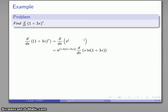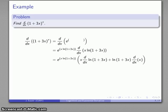Now to continue this derivative, we need to find the derivative of x times log of (1 plus 3x), and that's a product so we apply the product rule. That's going to be first times derivative of the second plus the second times derivative of the first.